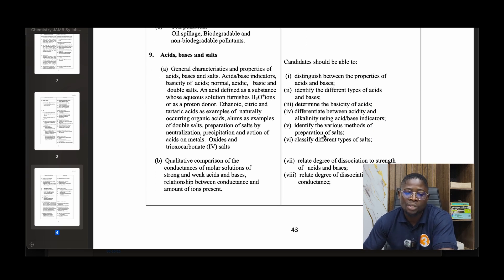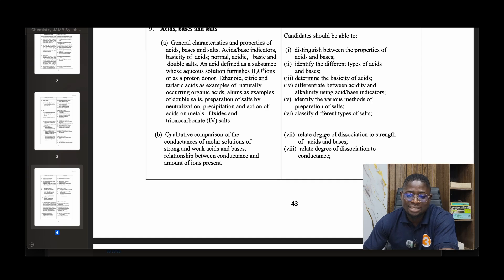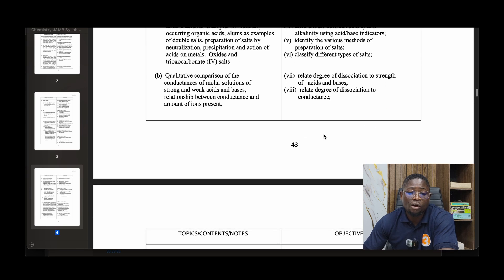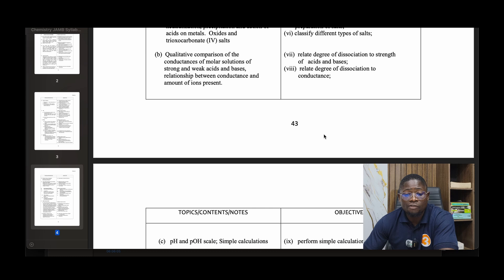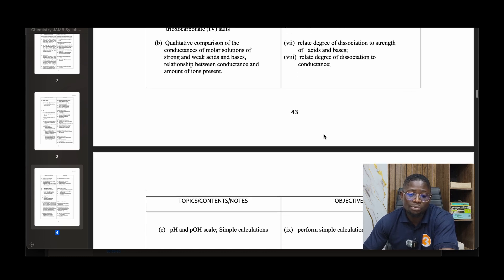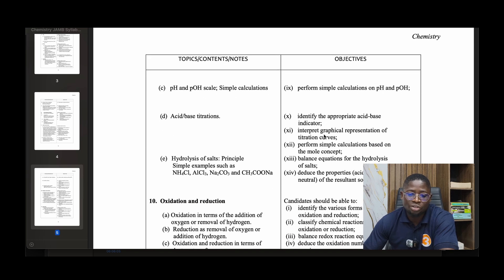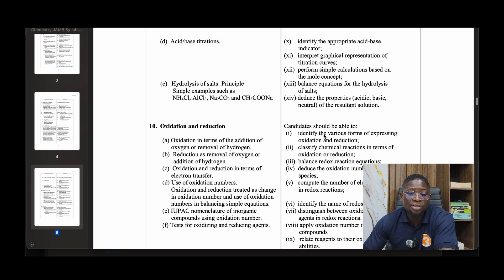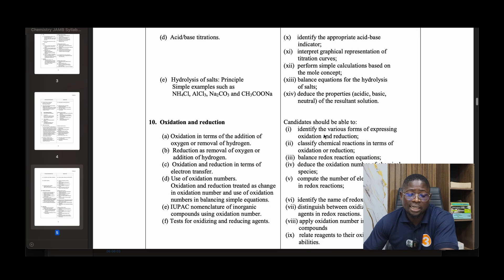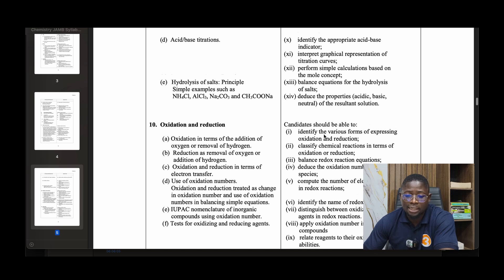Number ten: Acids, bases, and salts. General characteristics and properties of acids, bases, and salts. Basicity: normal, acidic, basic, and double salts. Acid defined as a substance whose solution furnishes hydronium ion (H₃O⁺) or as a proton donor. Ethanoic, citric, and tartaric acids as examples of naturally occurring organic acids. Alums as examples of double salts. Preparation of salts by neutralization, precipitation, and action of acids on metals. Qualitative comparison of conductance of molar solutions of strong and weak acids and bases. Relationship between conductance and amount of ions present. pH and pOH calculations. Acid-base titrations. Hydrolysis of salts: simple examples such as ammonium chloride, aluminum chloride, sodium carbonate, and sodium ethanoate.